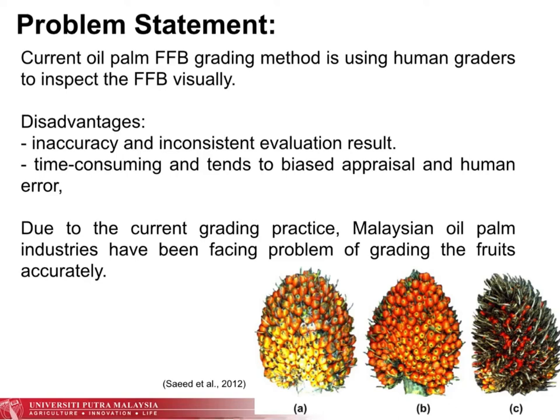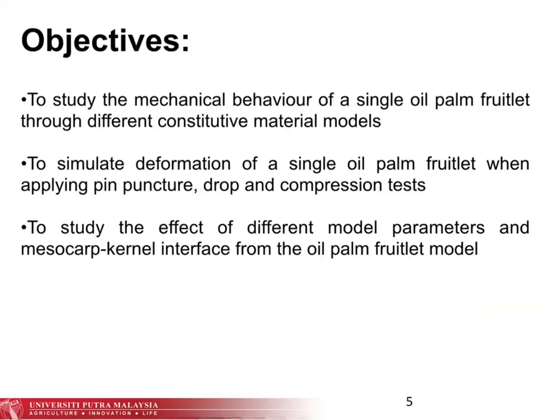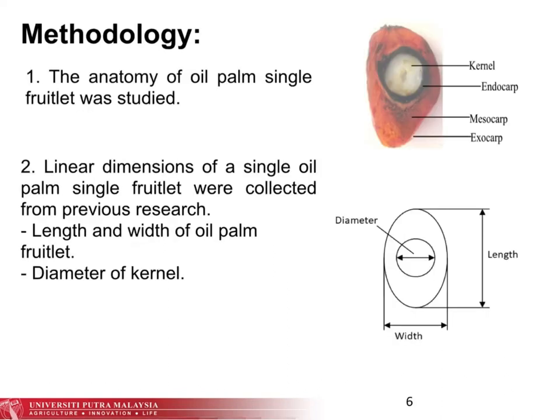Due to the current grading practices, the Malaysian oil palm industries have been facing problems of grading the fruits accurately. The main objective of this project is to study the mechanical behaviour of a single oil palm fruitlet. The project started by first studying the anatomy of the oil palm fruitlet, and then the linear dimensions of the fruitlet were collected from previous research.